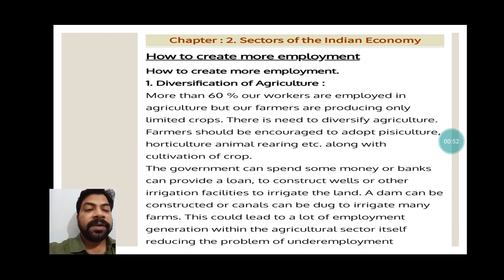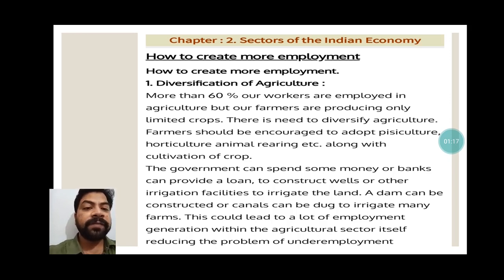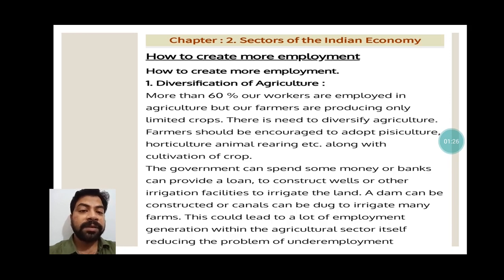The first way is diversification of agriculture. More than 60 percent of our workers are employed in agriculture, but farmers are producing only limited crops. There is a need to diversify agriculture. Farmers should be encouraged to adopt pisciculture, horticulture, animal rearing, etc., along with cultivation of crops. Agriculture does not mean only growing crops — it also means rearing of animals. People can get involved in pisciculture, horticulture, and sericulture, which can give surplus income to farmers.